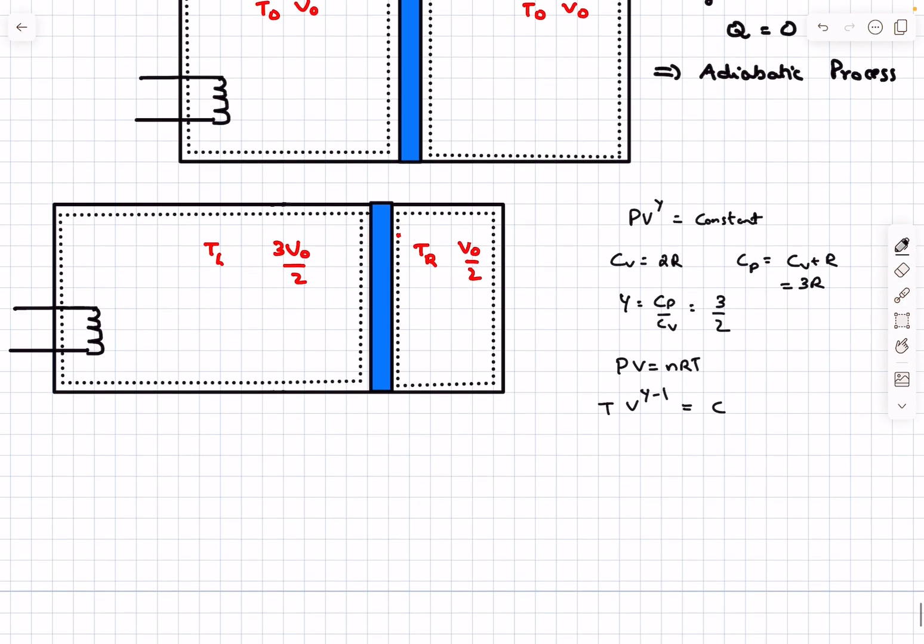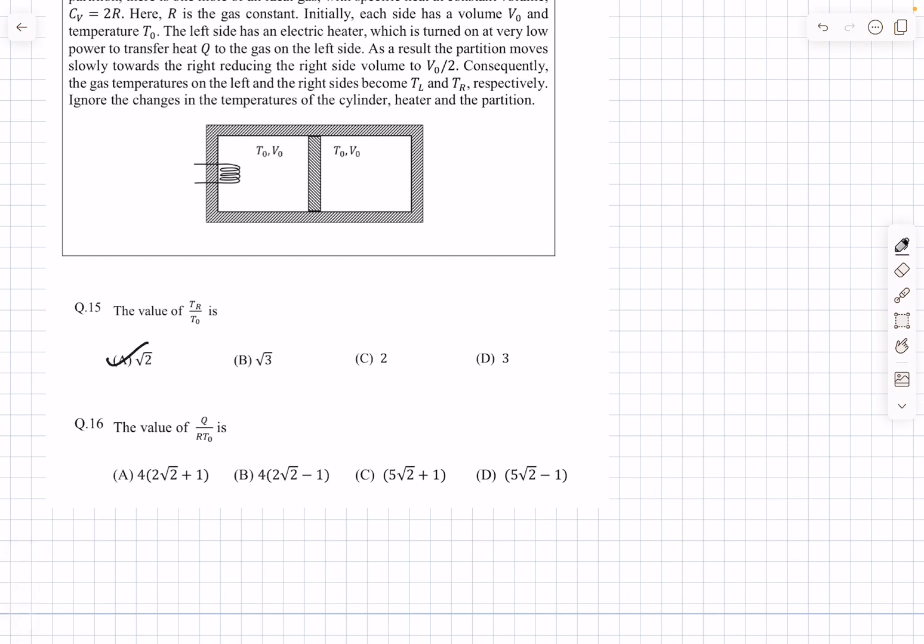Initially the temperature was T0 and the volume was V0. Finally the temperature is TR and the volume is V0/2. After solving this we get TR = √2 × T0. So the ratio TR/T0 is √2, and the answer is option A.